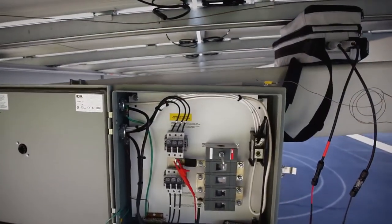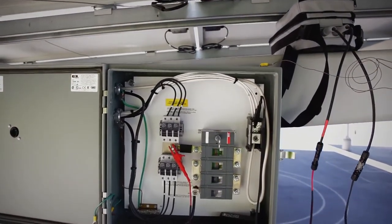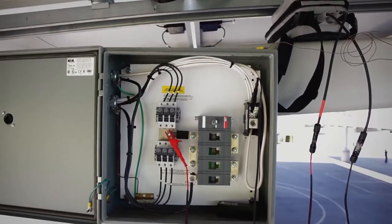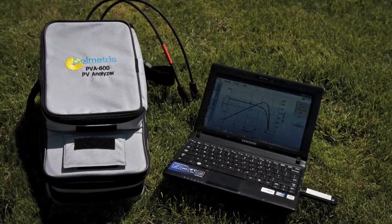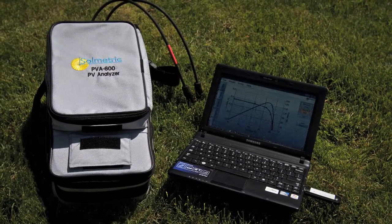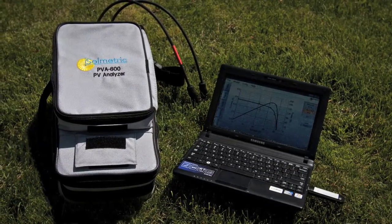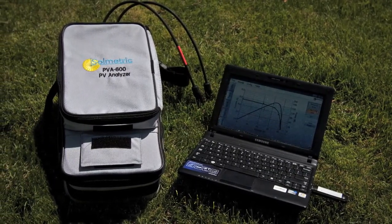Measurements take just seconds, and the results are immediately compared to an advanced PV model to evaluate the performance of the system. The Solmetric PV Analyzer IV measurement unit is controlled wirelessly by the user's PC. System software and a wireless USB adapter are provided.